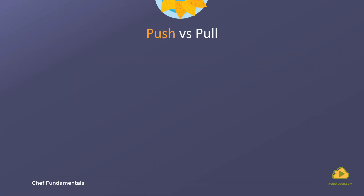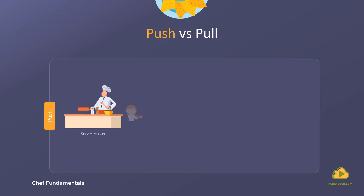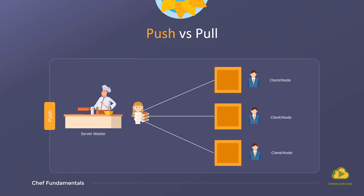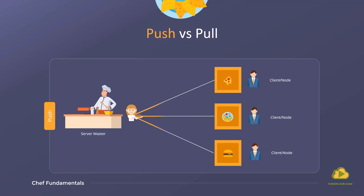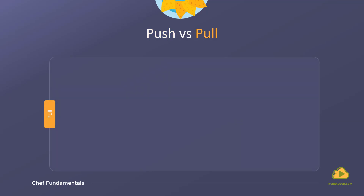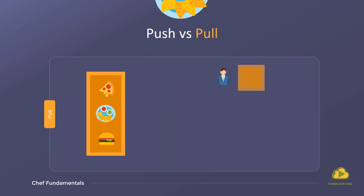There are two models of configuration management tools — push-based and pull-based. In a push-based model, a master server pushes the configurations and software to the individual servers. This is like a restaurant where the food is prepared and delivered to the customers. Configuration push is initiated by the master node. Some examples of such tools are Ansible and SaltStack.